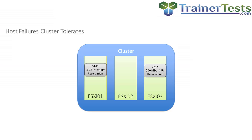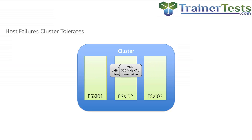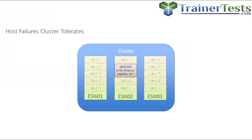The first step is to calculate the slot size, which is based on the largest CPU and memory reservations of any virtual machine in the cluster. Here we see VM1 with a 1 gig memory reservation and VM2 with a 500 megahertz CPU reservation, and those two virtual machines combine to form our slot size. Now we know how big the biggest VM can possibly be, and the next step is to determine how many slots can run on each of our hosts.